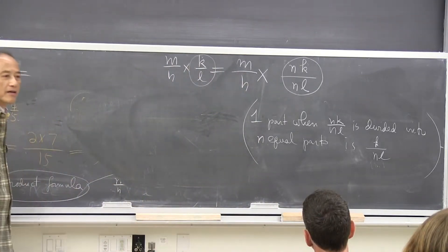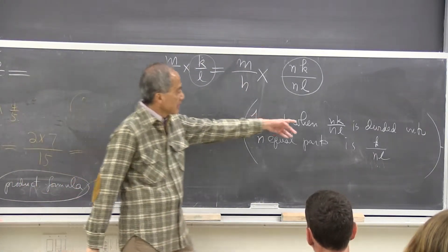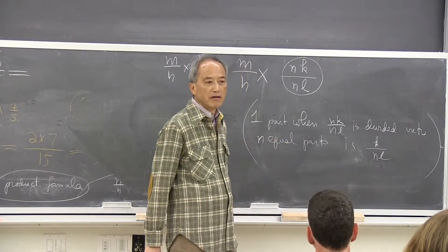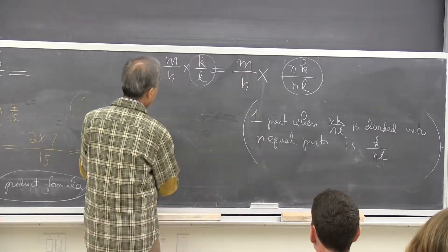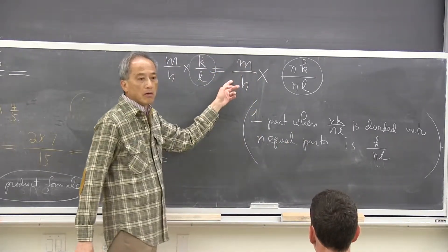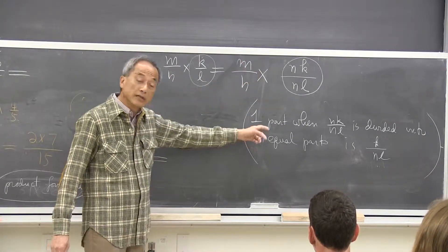Good. Simply. One part when NK of this N equal parts is K over NL. But now, coming back, is this what I want?